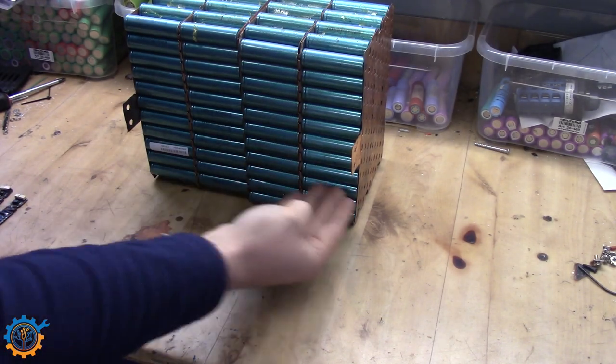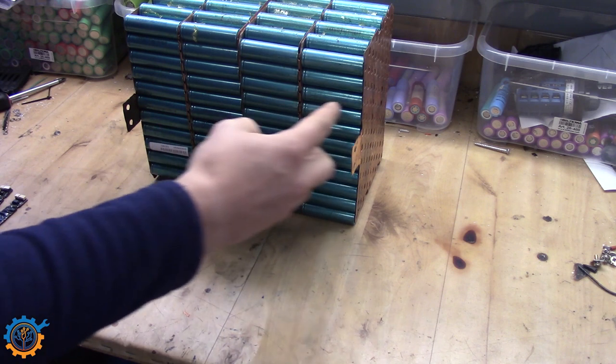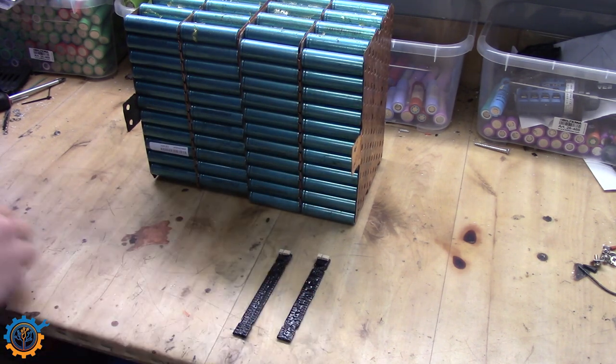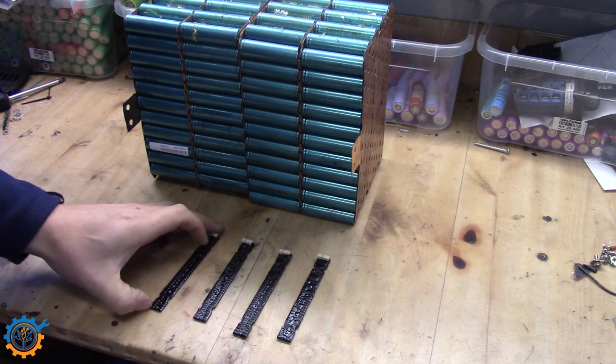So what we have here is a four cell pack. One, two, three and four cells. So that means we will need four long mounts.